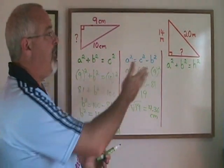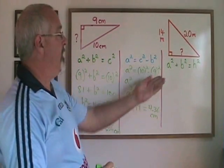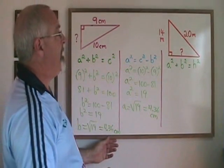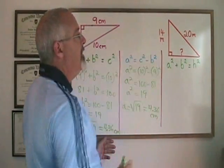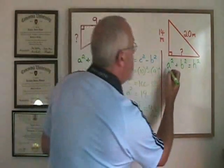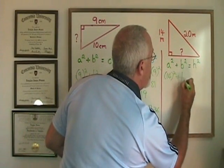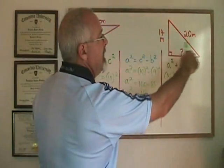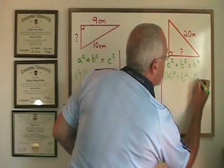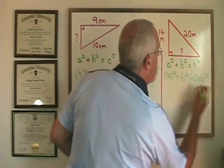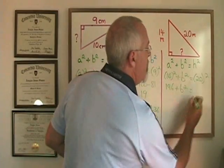No matter which variable is being used to represent the hypotenuse though, this is still Pythagorean theorem, and the algebra is going to look the same when we simplify. I am going to make A equal to the 14 meter side this time, so A squared becomes 14 squared. B squared is my unknown and will represent the length of this side, and H squared is going to be 20 squared. 14 squared is 196, and 20 squared is 400.